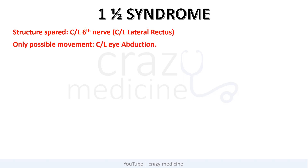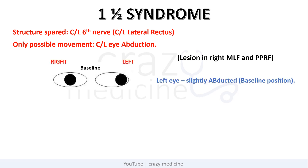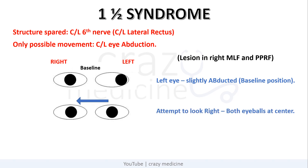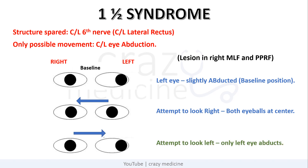As the only structure spared is the contralateral 6th nerve, i.e. contralateral lateral rectus, the only possible movement will be contralateral eye abduction. So in our example, with a lesion in right MLF and PPRF, the patient's left eye will be slightly abducted due to the unopposed action of the lateral rectus. When there is an attempt to look right, both eyeballs will appear at center. And when there is an attempt to look left, only the left eye abducts, as only the left lateral rectus is functional.